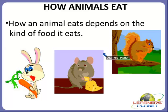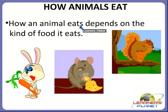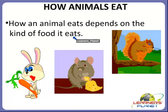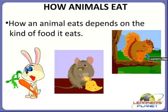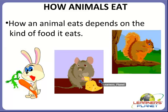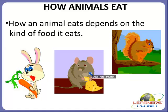Now we are going to study about how animals eat. How an animal eats depends on the kind of food it eats. Animals like a rabbit, a rat and a squirrel have sharp front teeth with which they bite nuts, fruits and peas. These animals gnaw their food.